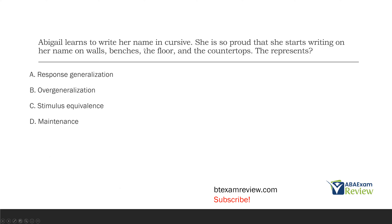She is now going across stimuli and writing on all these things — it's not response generalization. If anything it would be stimulus generalization, but really the best answer is overgeneralization. She's generalized too much. She learned to write her name in cursive, but was never taught to write on walls, benches, floors, and countertops — she just started doing that. When you generalize in an inappropriate manner, that's considered overgeneralization. We're not sure if it's maintenance either — we didn't teach her to do these things, and we're not sure if teaching has stopped. The best answer, what we are most sure of, is overgeneralization.